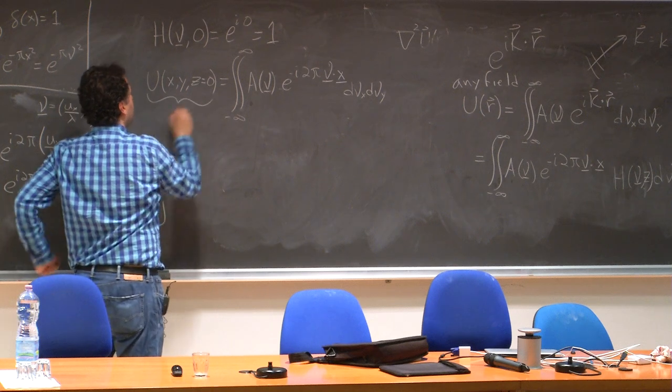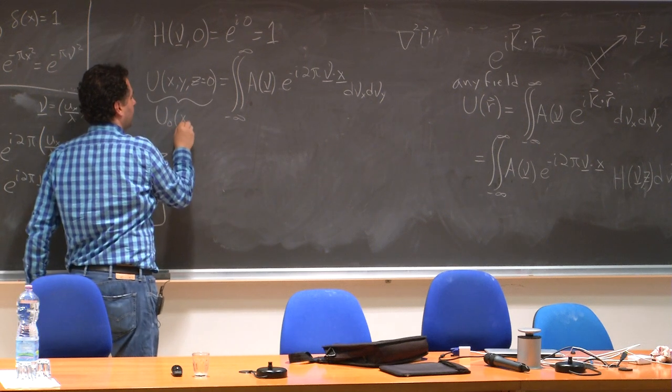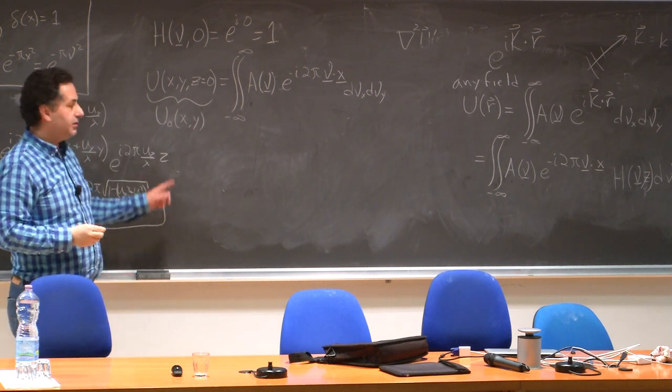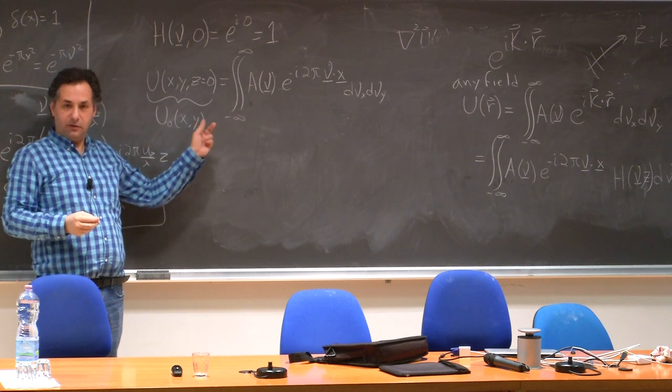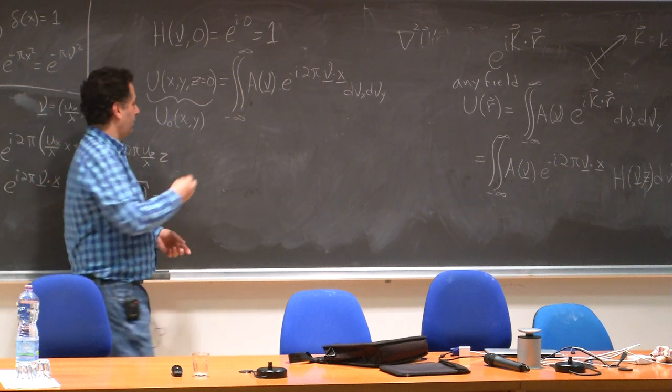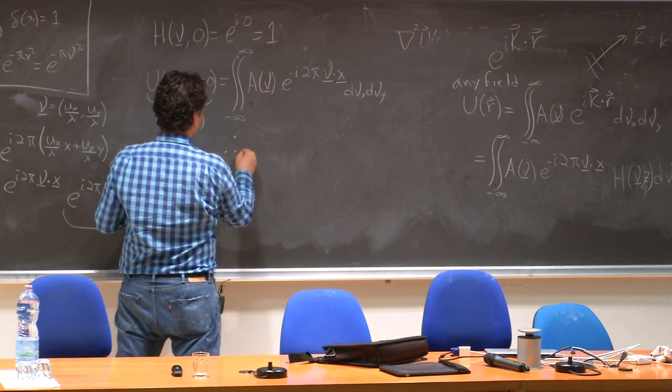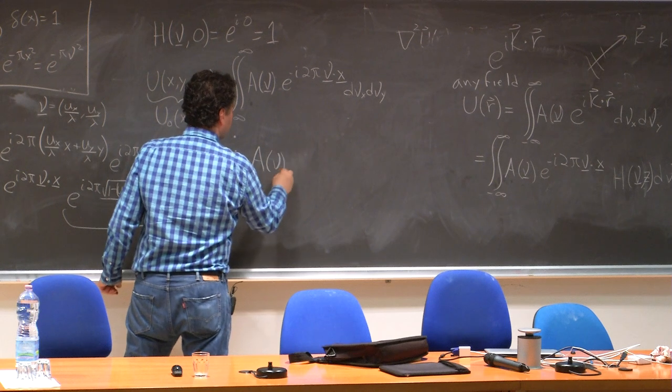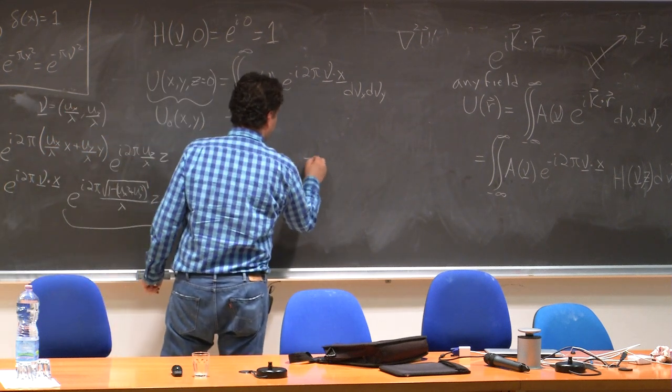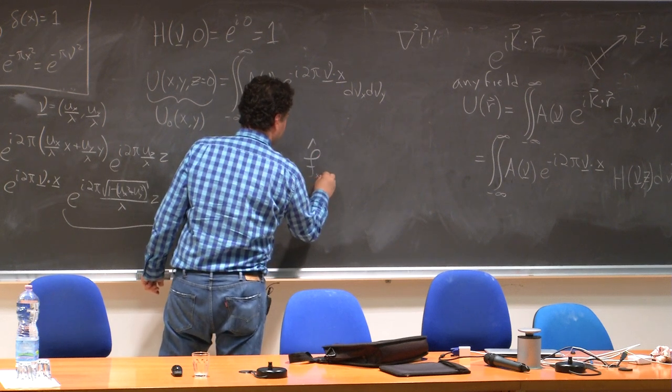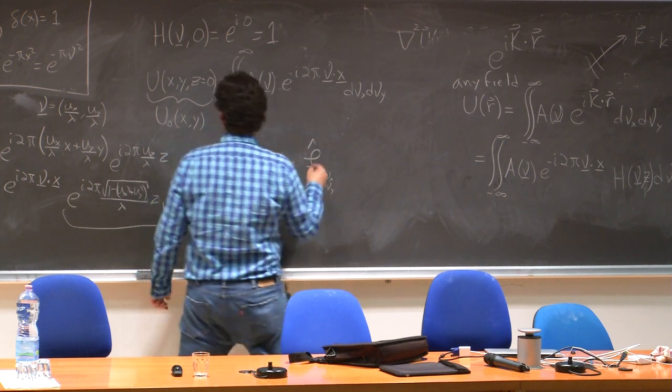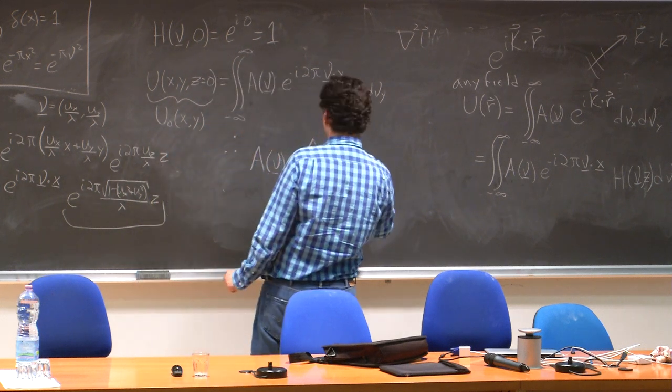The inverse Fourier transform of A is equal to the field at the first plane. So I can call this the initial plane u of x, y. That means that A is the Fourier transform of the initial plane. So therefore, this A of nu, which is called the angular spectrum, is the Fourier transform as x goes to nu x, y goes to nu y of the initial field.